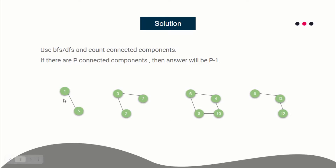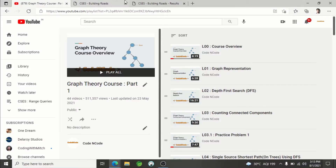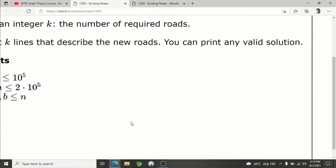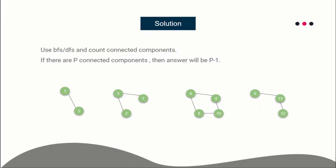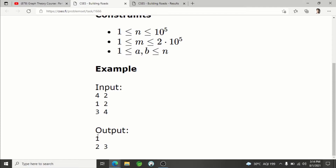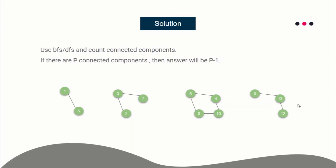Just think about it: if this was the whole graph with four connected components, you only need to add three edges. So count the total number of connected components and print P minus one, where P is the number of connected components. In this example, you print how many edges to add and also print those edges. The first output will be the number of connected components minus one — in this case, three.